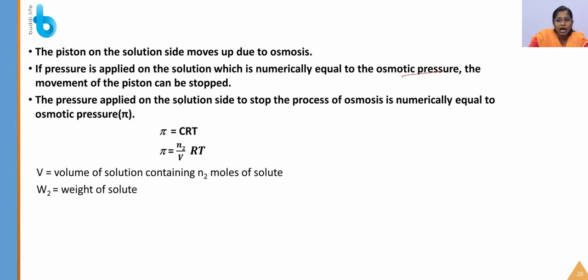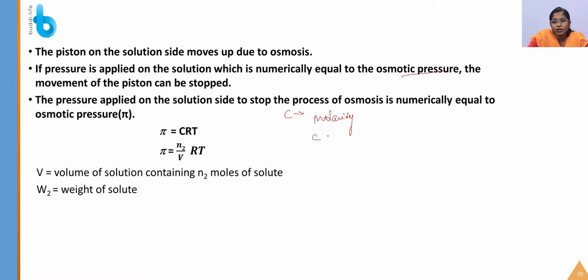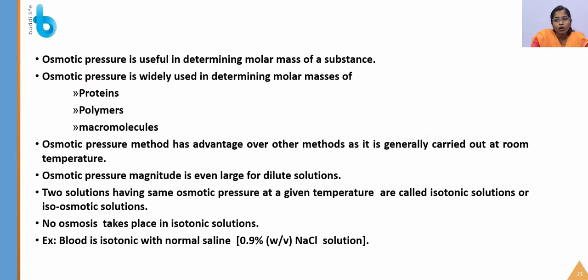The osmotic pressure formula is π = CRT, where C is the molarity (number of moles of solute per liter of solution), R is the gas constant, and T is the temperature. C = N₂/V, where N₂ is moles of solute and V is volume of solution in liters. Osmotic pressure is useful in determining the molar mass of a substance and is widely used to determine molar masses of proteins, polymers, and macromolecules.